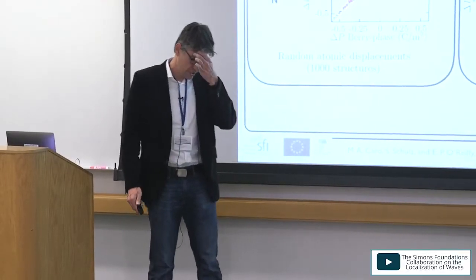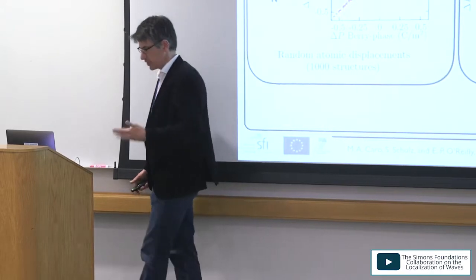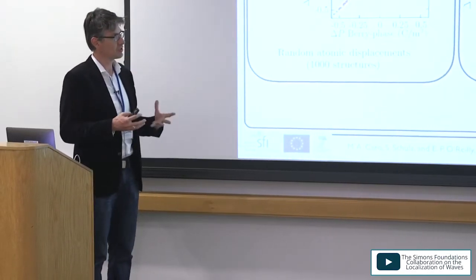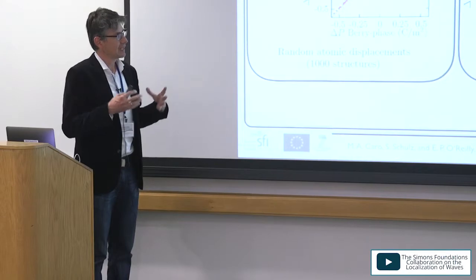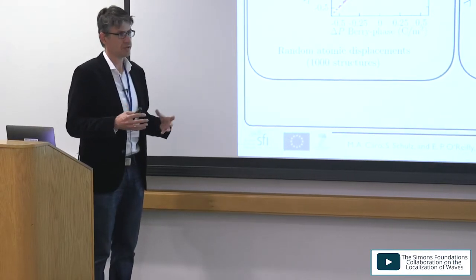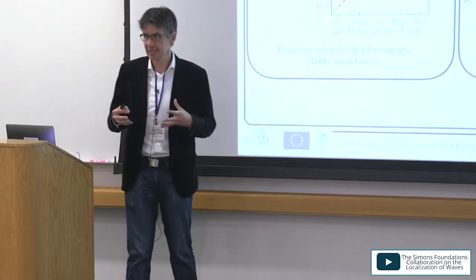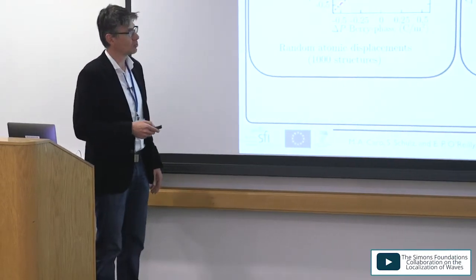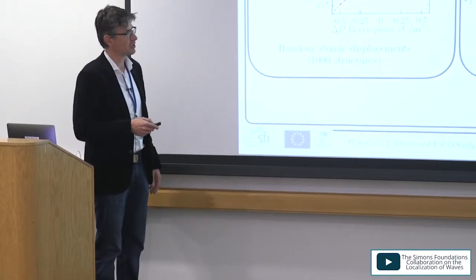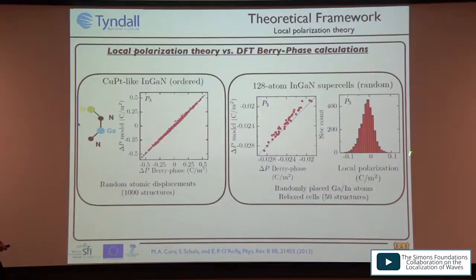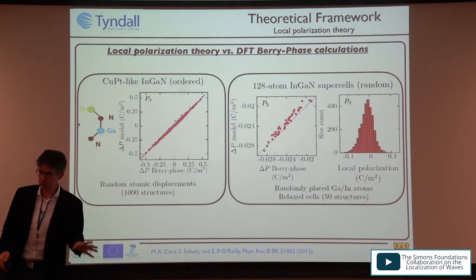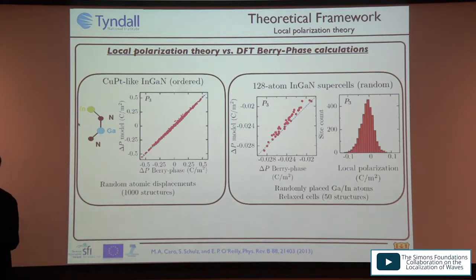The Berry phase gives an average polarization over the supercell, providing no insight into local features. Our local polarization theory, however, does capture local fluctuations — we have a wide spread of local effects, and the average of these gives us the data points. So we not only have the average polarization but also the local fluctuations.